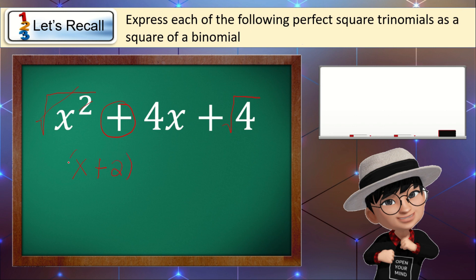Then we raise it to the second power. To check if the answer is correct, multiply 2 times 2 times x, and that is equal to positive 4x. Therefore, if we convert x squared plus 4x plus 4 as a square of binomial, the answer is the quantity of x plus 2, squared.